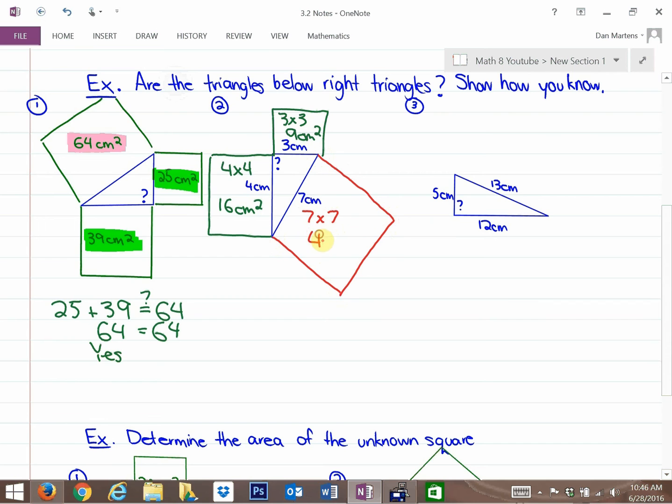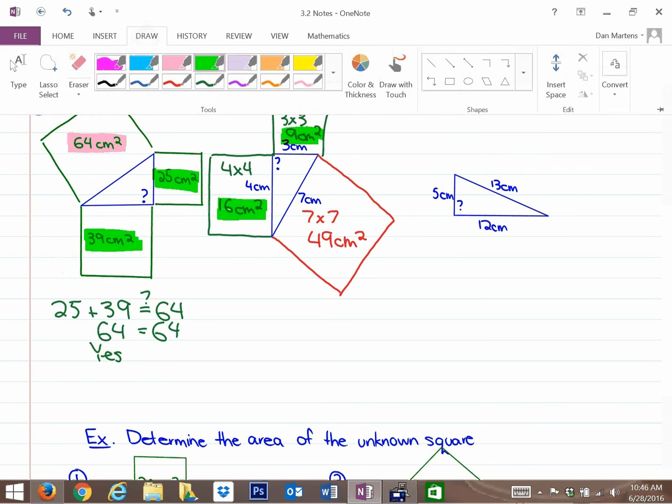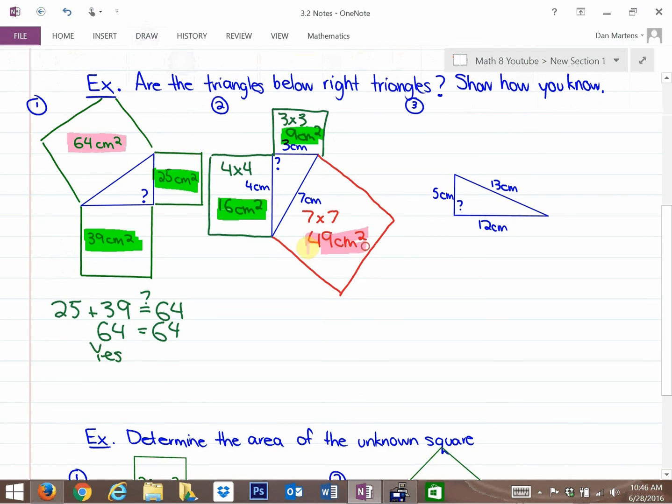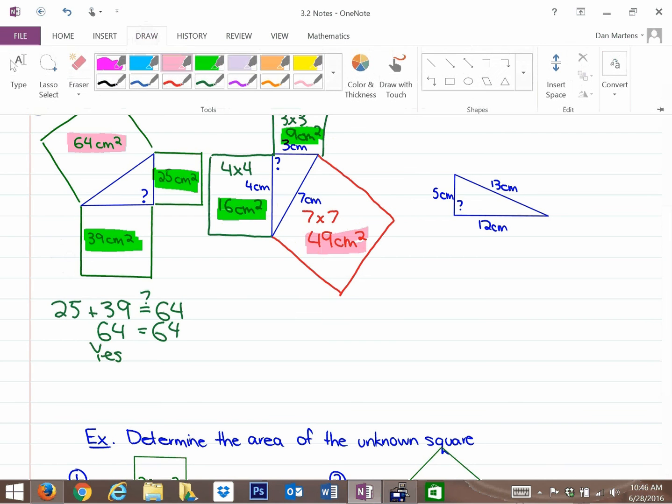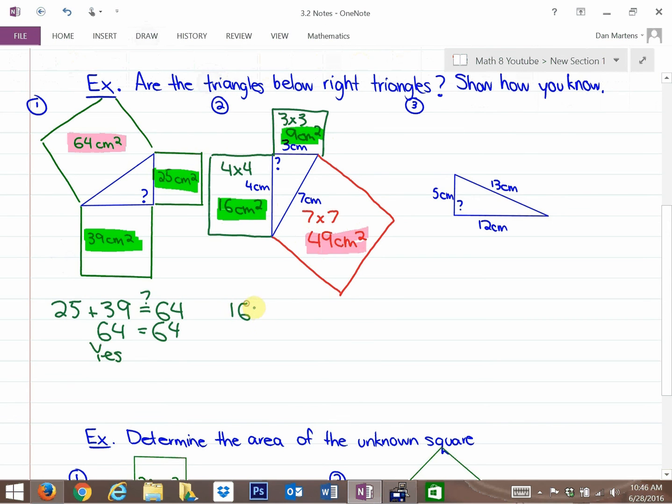So this definitely isn't going to be a right triangle. But let's do the numeracy. The area here is going to be 49 centimeters squared. So if this was a right triangle, the two small areas, the 9 and the 16, would add up to the large area, the 49. And we already know, but I'll just show the work for it, is 16 plus 9 equivalent to 49? And the answer to that is absolutely not. So the answer here is no. It's not a right triangle.